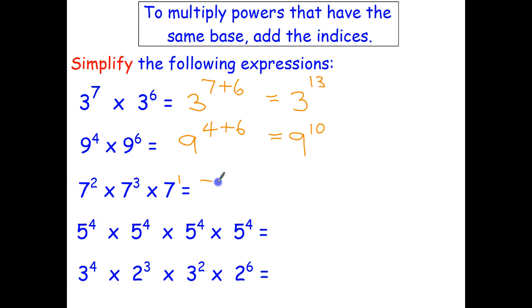So this is going to be 7 raised to the power of 2 plus 3 plus 1. 2 plus 3 is 5 plus 1 is 6. That's 7 to the power of 6.